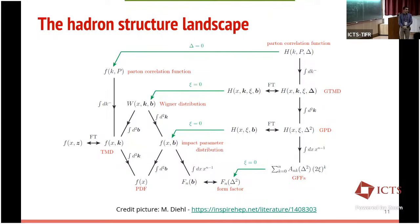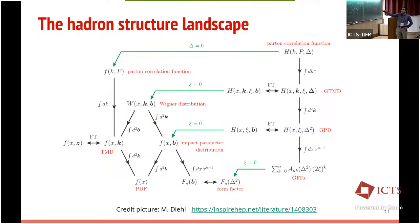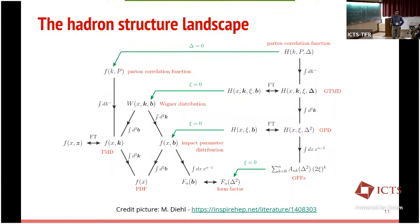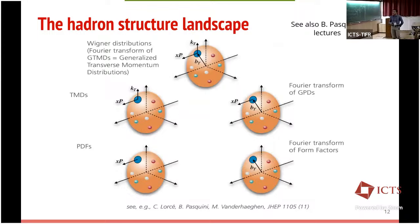Regarding hadron structure, this slide from a nice introductory paper by Marcus Diehl on TMDs and GPDs shows how many distributions we can define to get information on hadron structure. Starting from the most general object, the parton correlation function, and by projecting or integrating out specific variables, you can go down to Wigner distributions, generalized parton distributions, transverse momentum dependent distributions, and the PDFs. I strongly suggest you read this paper as an introduction.